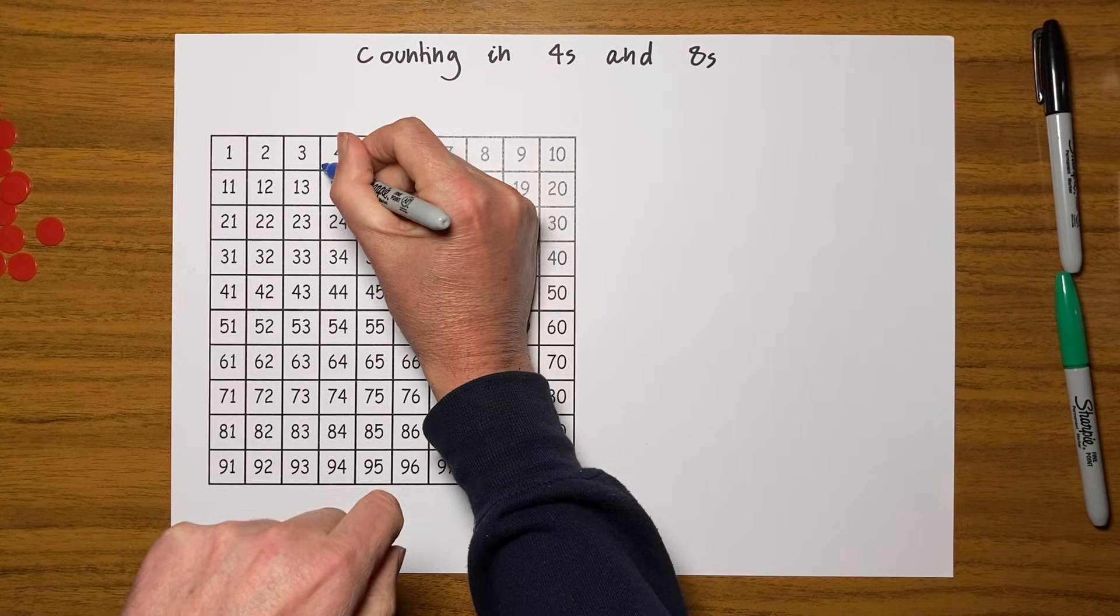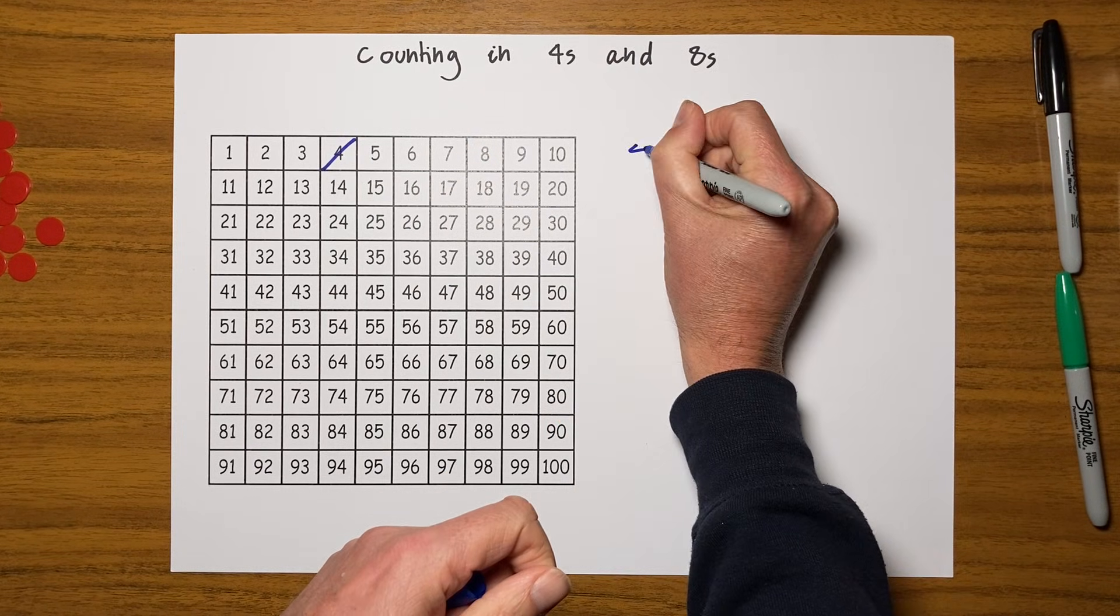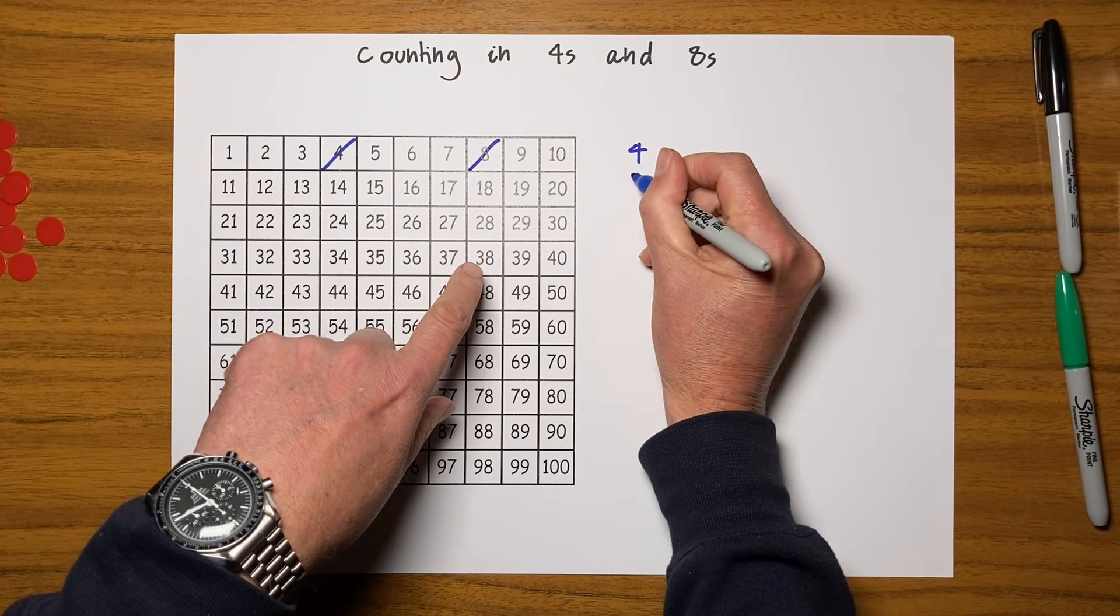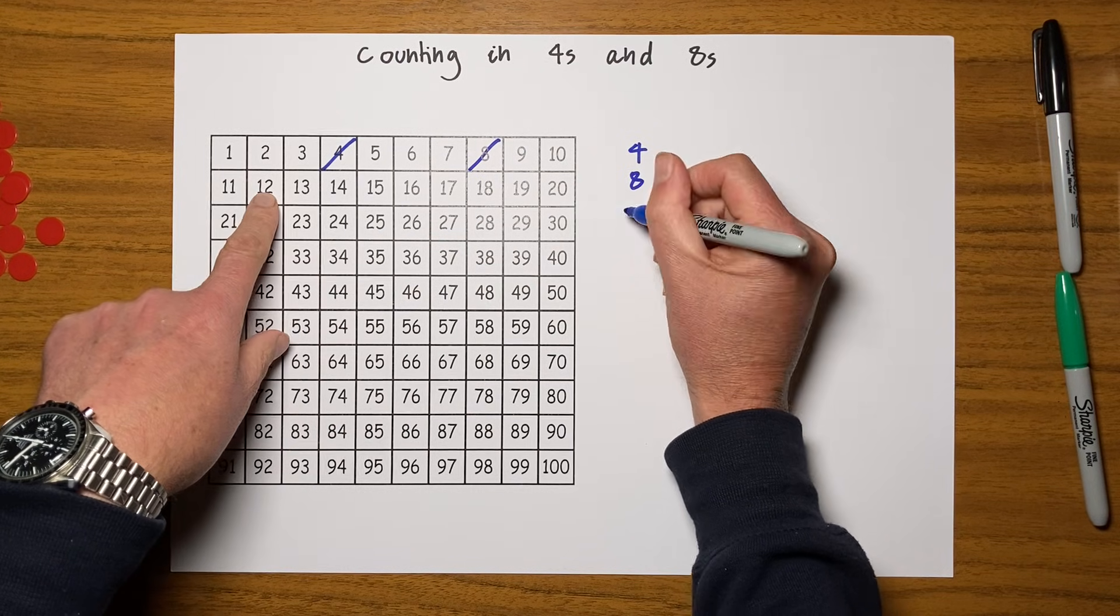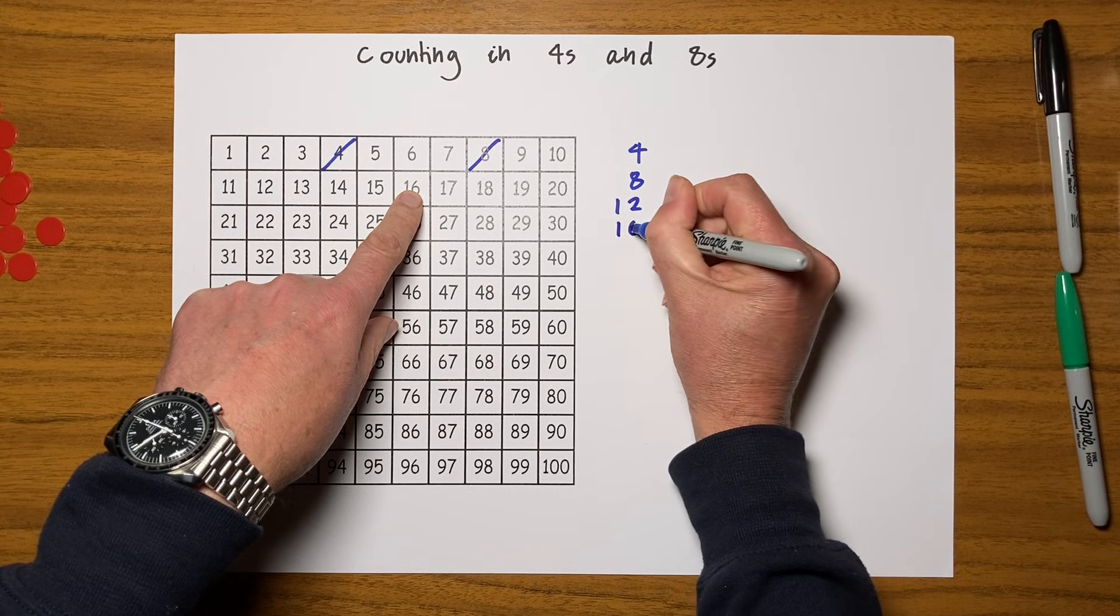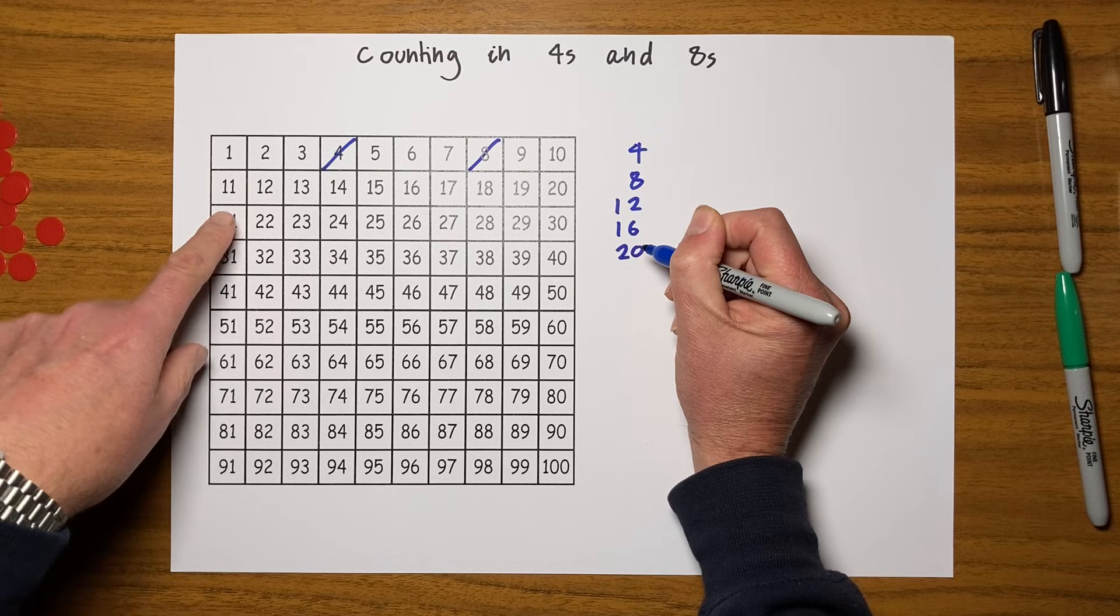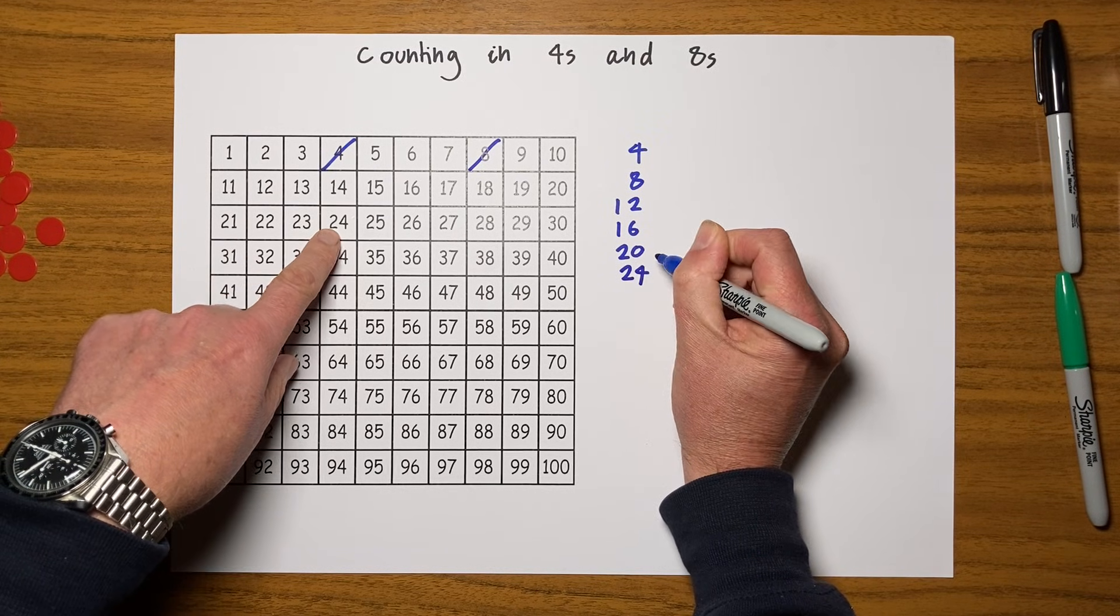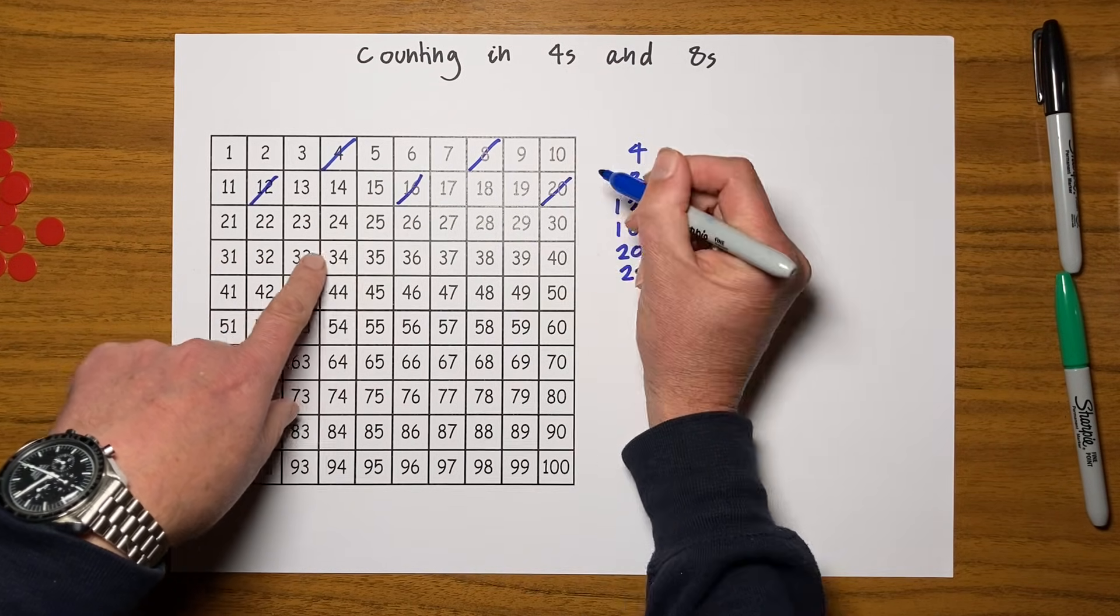The hundred square is always really good for this. We can write it here: one, two, three, four. Let's keep writing as we go along. One, two, three, four. One, two, three, four. Sixteen, twenty, one, two, three, four, twenty-four.